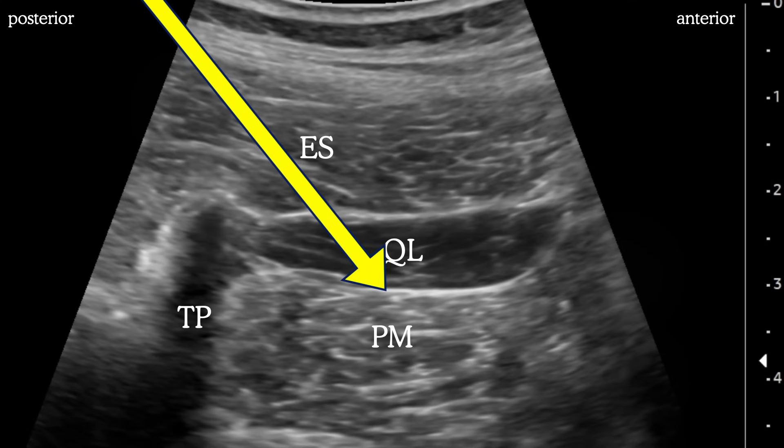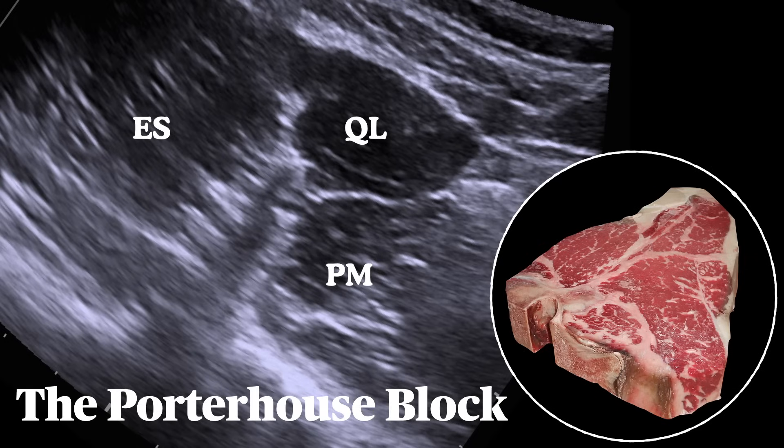The nomenclature of this block has evolved and has become quite contentious at times. Maybe I'm just hungry, but I think this block should be named for the steak that, frankly, looks exactly like the picture we're after. Let's get 'porterhouse block' trending, shall we?